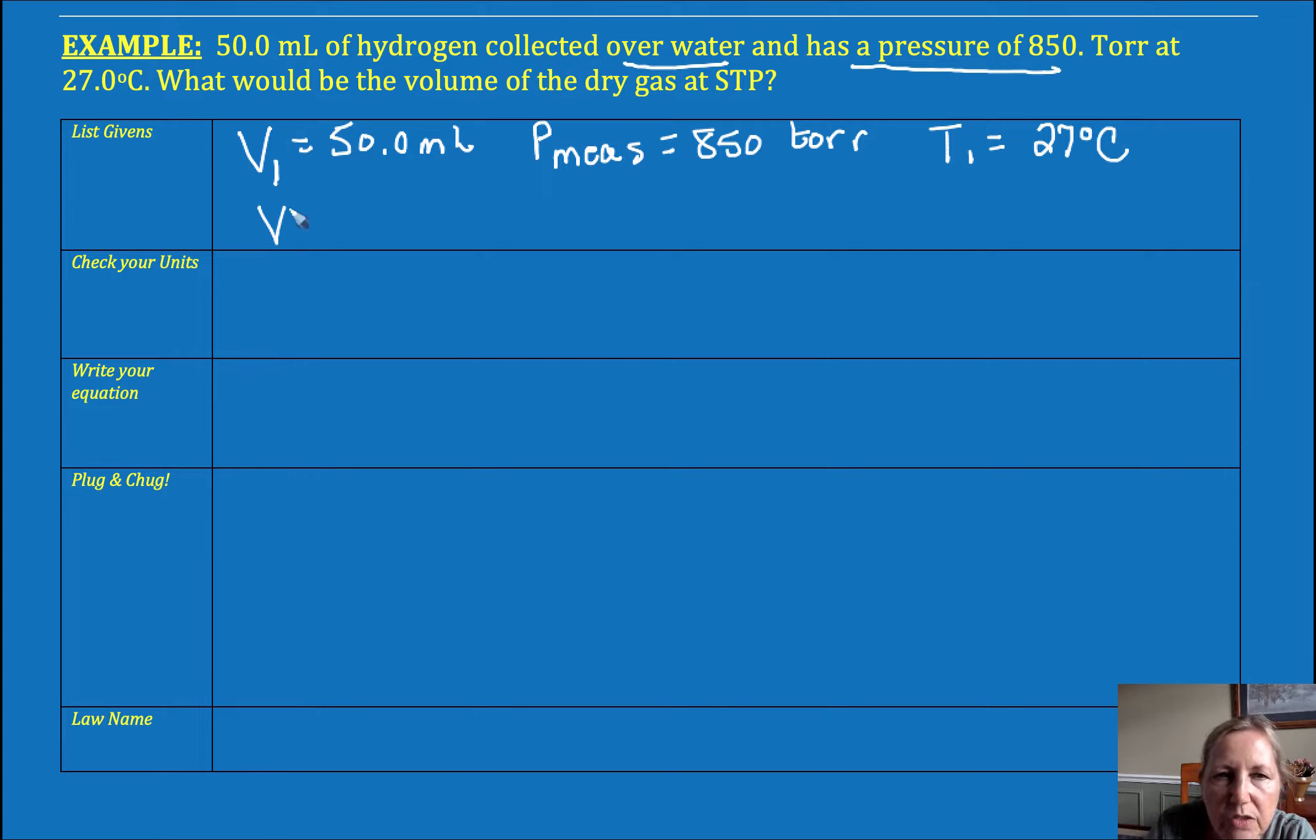Then the question goes on to say, what's my new volume? Because I'm going to change conditions of my dry gas. So over water, take away water. If you want to dry something off, you take away the water. So I want to know my new pressure. Standard pressure is 760 torr. I don't want to use one atmosphere because I've already got torr and I don't want to convert. So any standard pressure will do. Standard temperature, T2 is 273 Kelvin. Those are my givens.